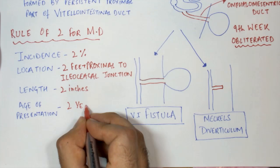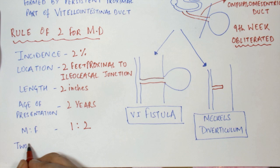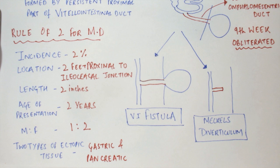The most common age of presentation is around 2 years. Male to female ratio is around 1 to 2, and 2 types of ectopic tissue may be present in Meckel's Diverticulum: gastric and pancreatic.